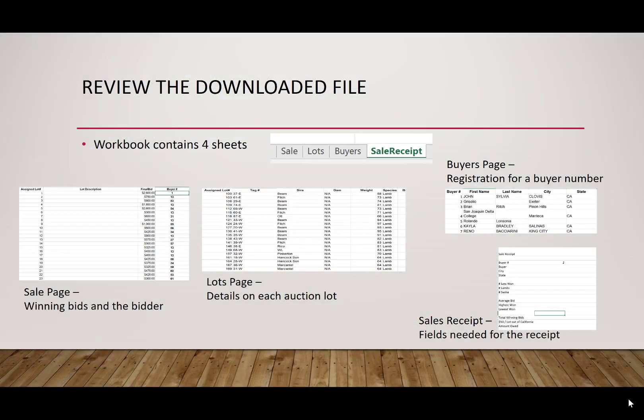Let's begin by reviewing the downloaded file. You'll find this file in our online classroom area. This workbook contains four worksheets. There's a sale page, which has all the winning bids and the bidder, but notice there's no lot description to describe what they are. This would be used during the sale, updated live, where they could put in the final bid as soon as it closes and also the buyer for that.